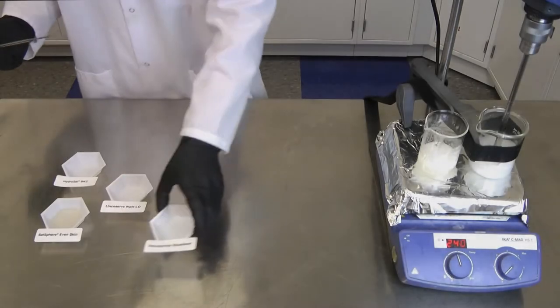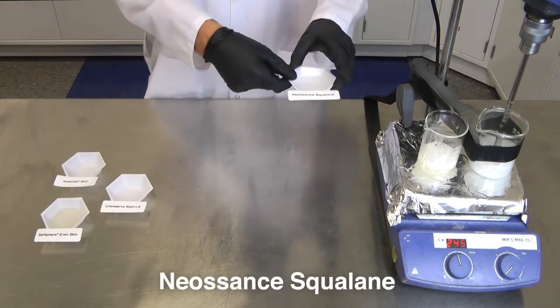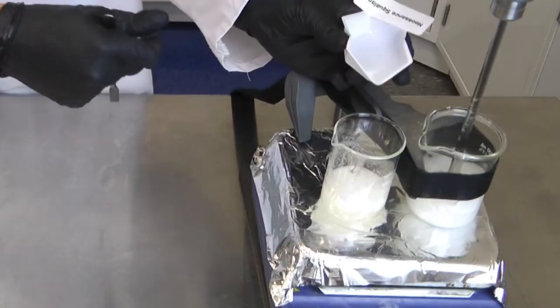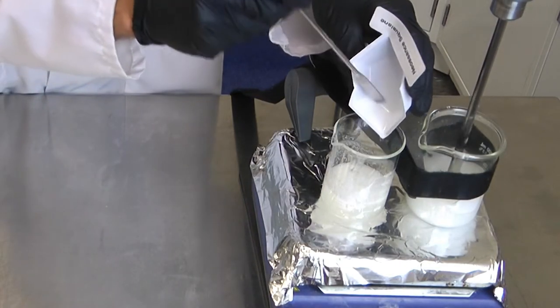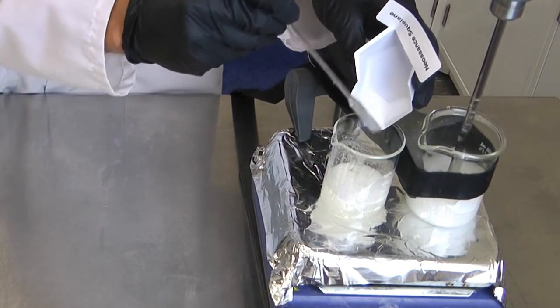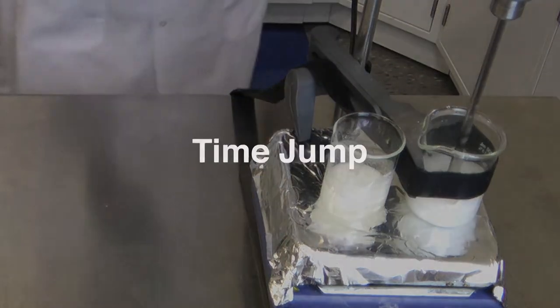The next ingredient that we will add to the oil phase is squalane. This is a very common emollient used in a lot of formulas, and here we are using it to help reduce the transepidermal water loss on the skin and restore the skin's suppleness and flexibility.